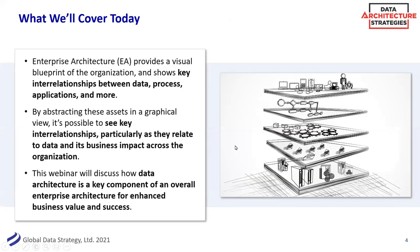Today what we'll be covering is enterprise architecture, and specifically enterprise architecture in its relationship to data architecture. This is a data architecture series, so we'll definitely have a bit of a bias toward data architecture. But the beauty of enterprise architecture is that it really takes a more holistic view of the organization — how data relates to process, business capabilities, and most importantly, business value. Most organizations are trying to be data-driven, and enterprise architecture is a really great way to support that.